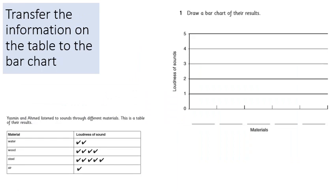Do you remember our science sound topic earlier in the year? Here we have a table and a bar chart template. Yasmin and Ahmed listened to sounds through different materials. This is a table of their results — they've collected what they found out and written it in the table. The materials they used are water, wood, steel and air, and they've indicated how loud the sounds were with the number of ticks beside each material.